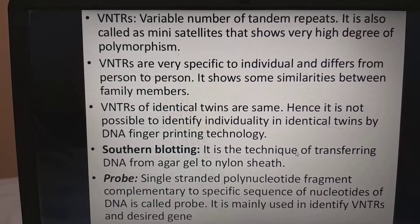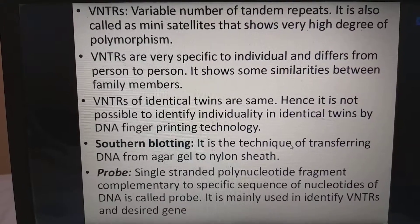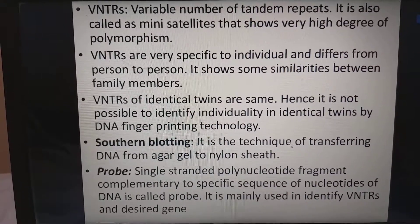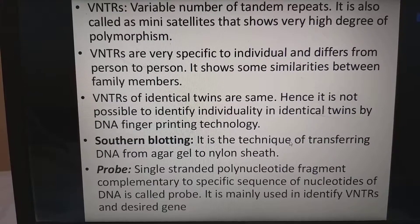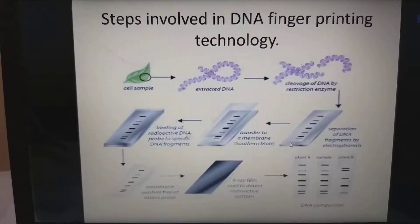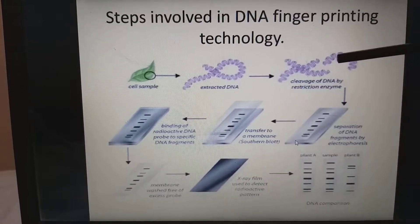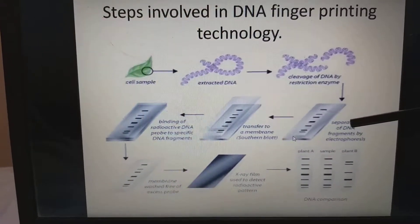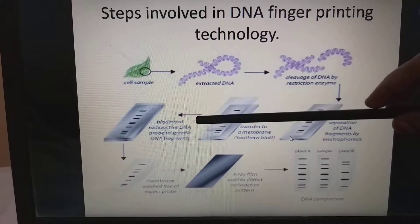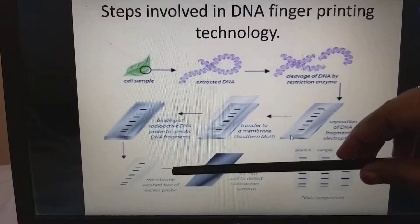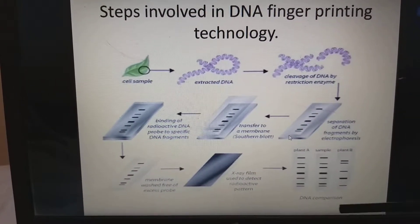Southern blotting is a technique of transferring DNA from agar gel to a nylon sheet. A probe is a single-stranded polynucleotide fragment complementary to a specific sequence of DNA nucleotides, mainly used to identify VNTRs and desired genes. Steps involved in DNA fingerprinting: cell sample → extracted DNA → cleavage of DNA by restriction enzymes → separation of DNA fragments by electrophoresis → transfer to a membrane through southern blot → binding of radioactive DNA probe to specific DNA fragments → membrane washed free of excess probe → x-ray film used to detect the radioactive pattern. This gives the DNA comparison between samples.